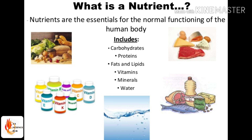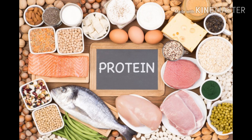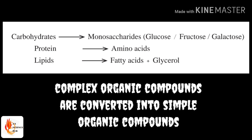In that unit we studied about organic compounds — mainly carbohydrates, lipids, and proteins present in the food we consume. We know their complex and simple structures. Complex carbohydrates are polysaccharides; their simple form is monosaccharides. Proteins are the complex structure and their basic unit is amino acids. Lipids are made up of fatty acids and glycerol.